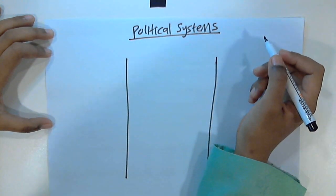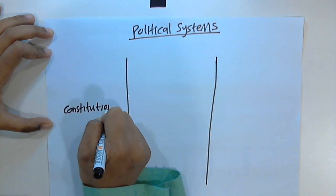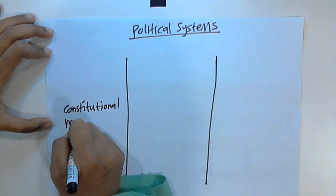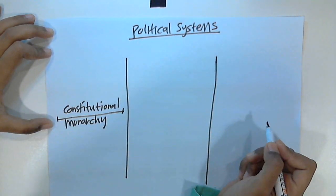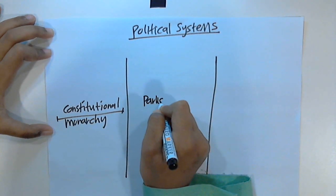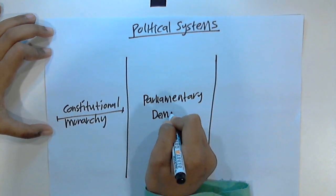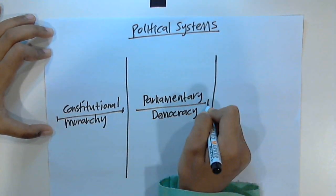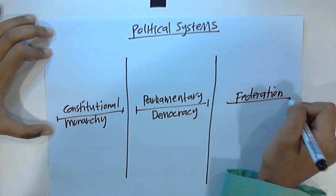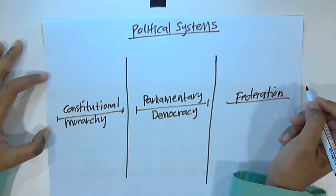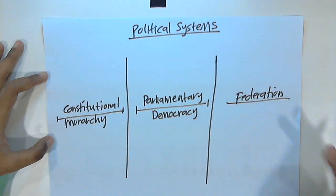The first one is known as constitutional monarchy. The second system is parliamentary democracy. And the last one is federation — some might call it federalism. Let's look one by one at what each of these systems means.